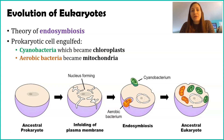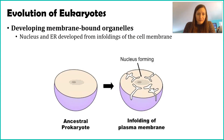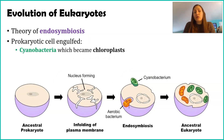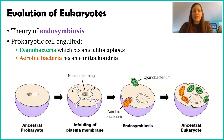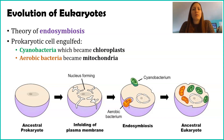Scientists do not believe that mitochondria and chloroplasts were covered by infoldings of the membrane. They believe these two organelles were actually acquired — they did not come from within the cell, but actually from outside of the cell.